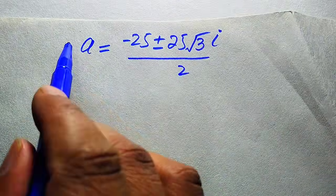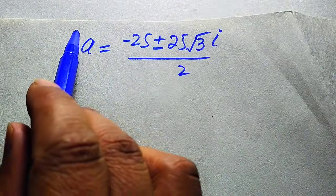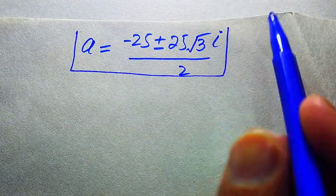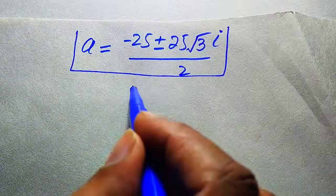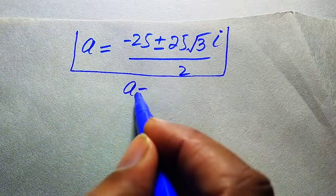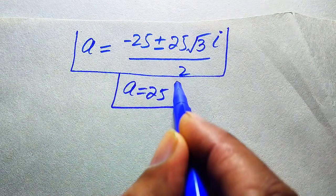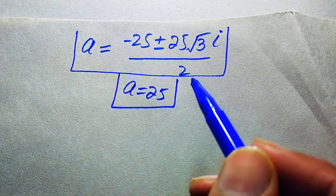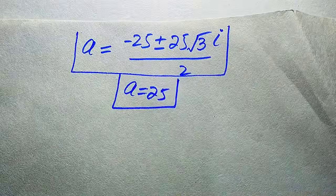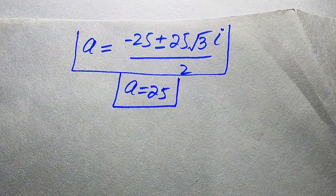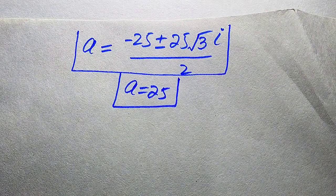Finally, there are three roots of the given equation, of which two are complex roots. The one real root is a equals 25. This is the final answer. Thank you so much for watching this video — please subscribe to my channel for more exciting videos.